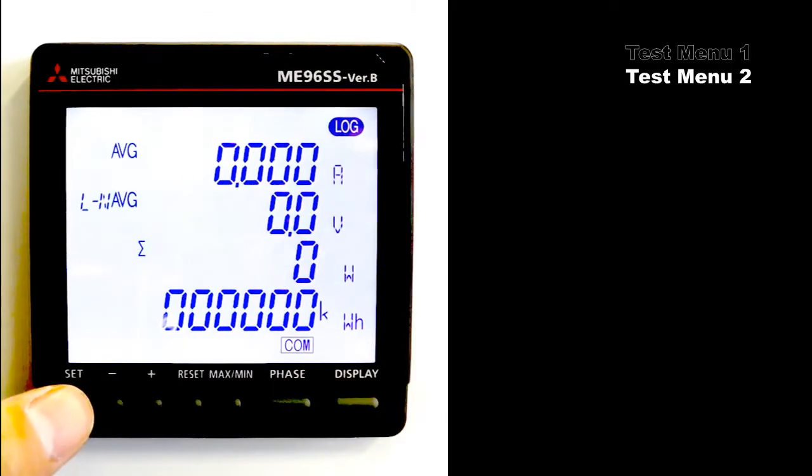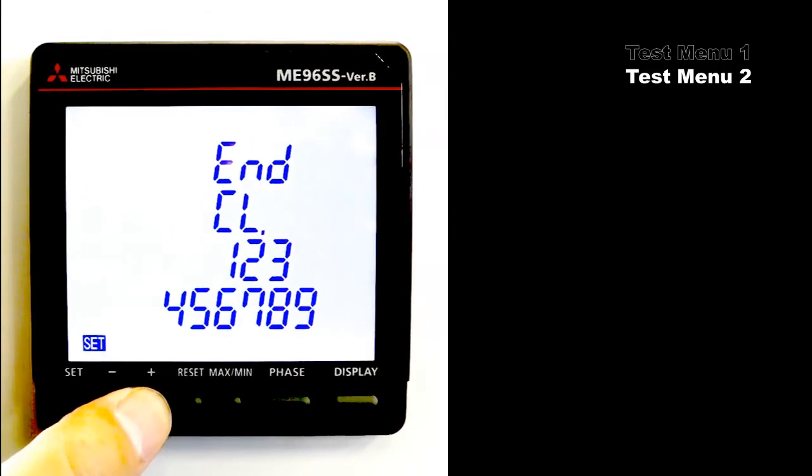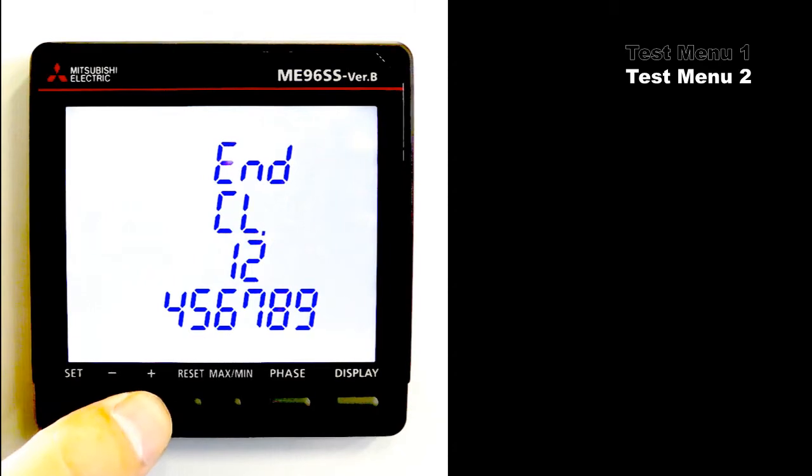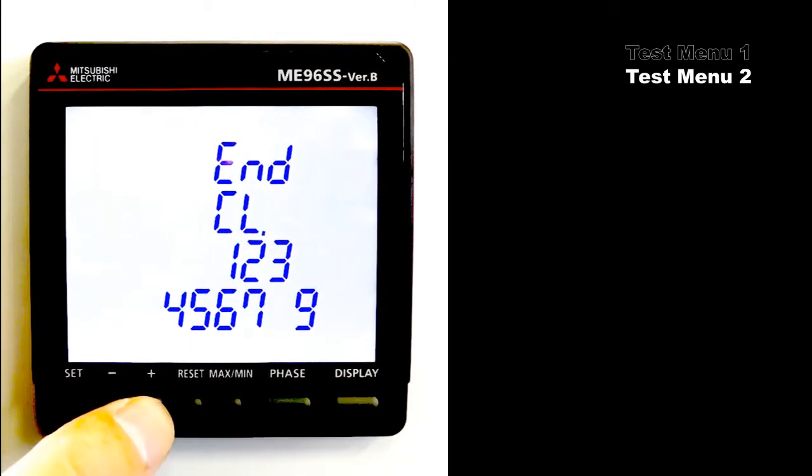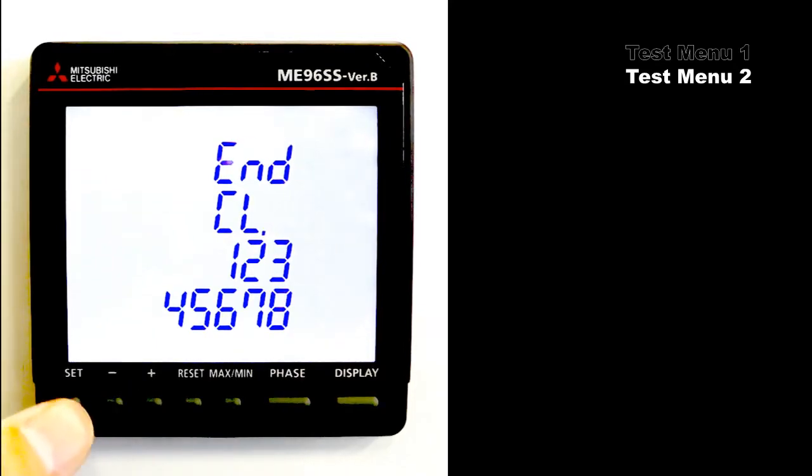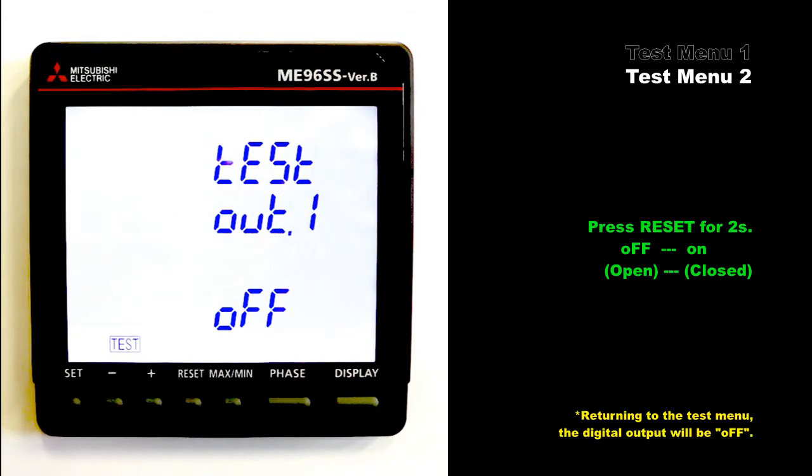Press and hold set for 2 seconds. Press plus to blink 9. Press set to move to the test menu. Press plus to blink 2. Press set to move to test menu 2.